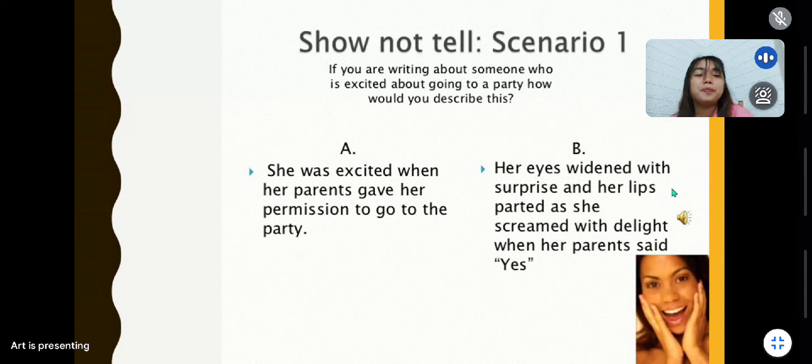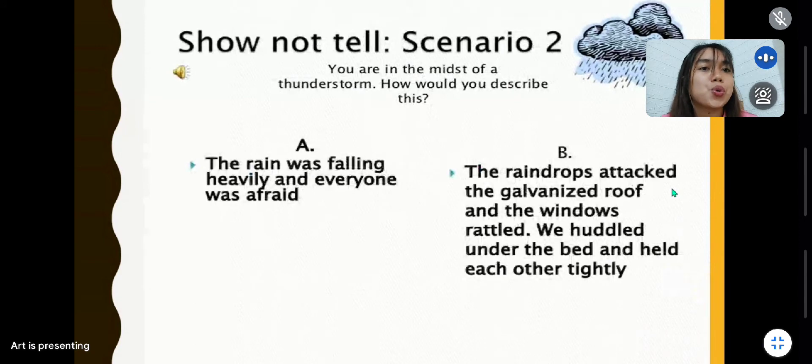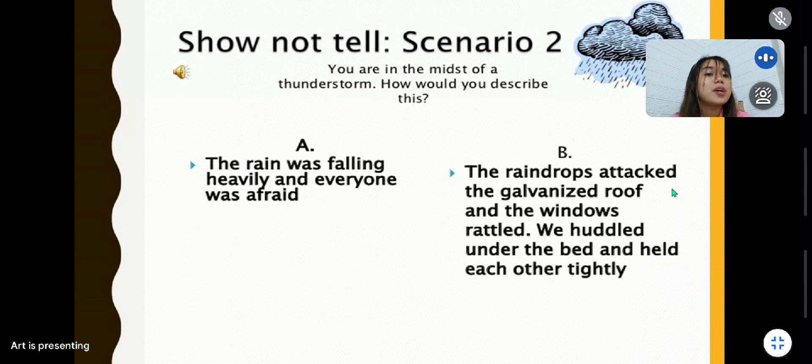Okay, very good. Next one, we have show not tell scenario number two. You are in the midst of a thunderstorm. How would you describe this? A: The rain was falling heavily and everyone was afraid. Or B: The raindrops attacked the galvanized roof and the windows rattled. We huddled under the bed and held each other tightly.